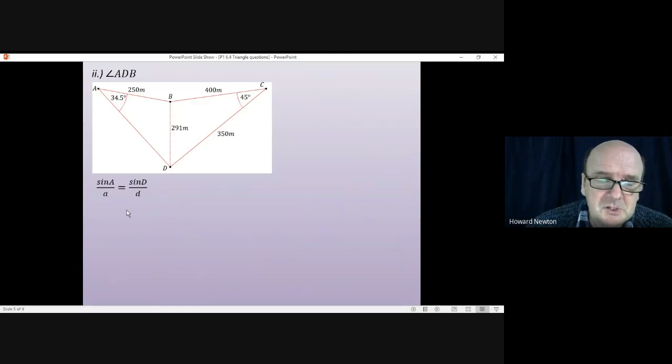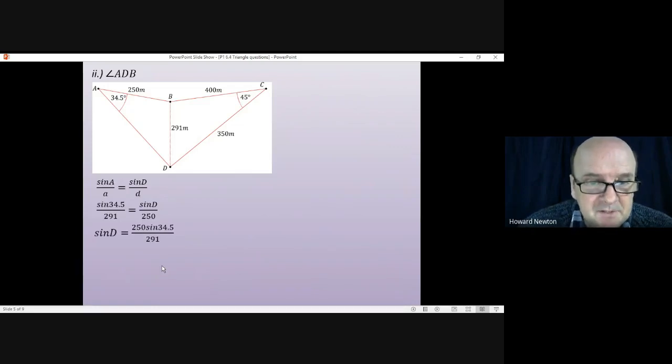Otherwise you just substitute in the three things you know. So we get sin(34.5)/291 = sin(D)/250. That gives us sin(D) = 250 × sin(34.5)/291.